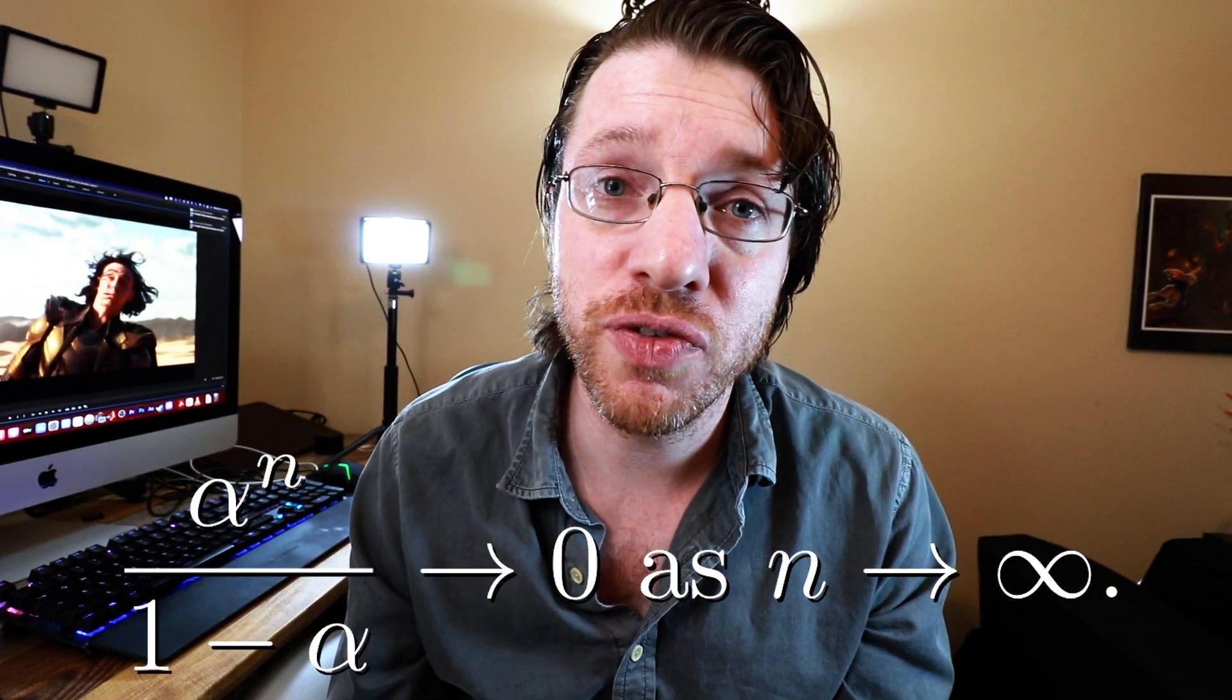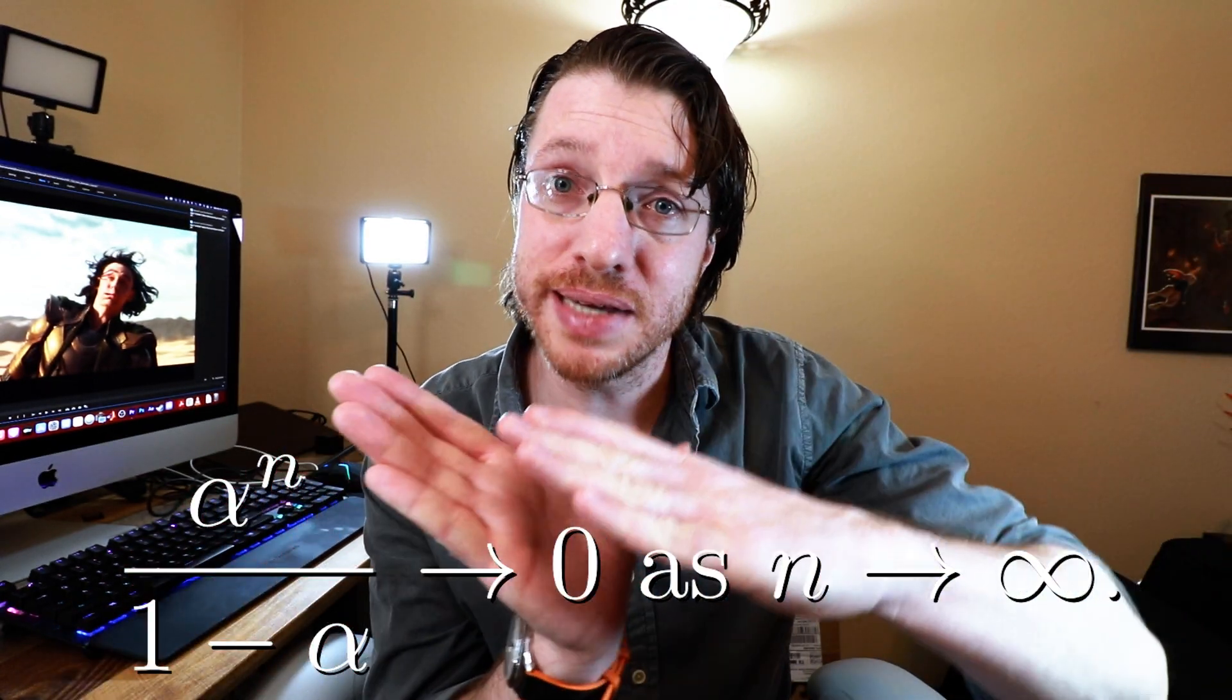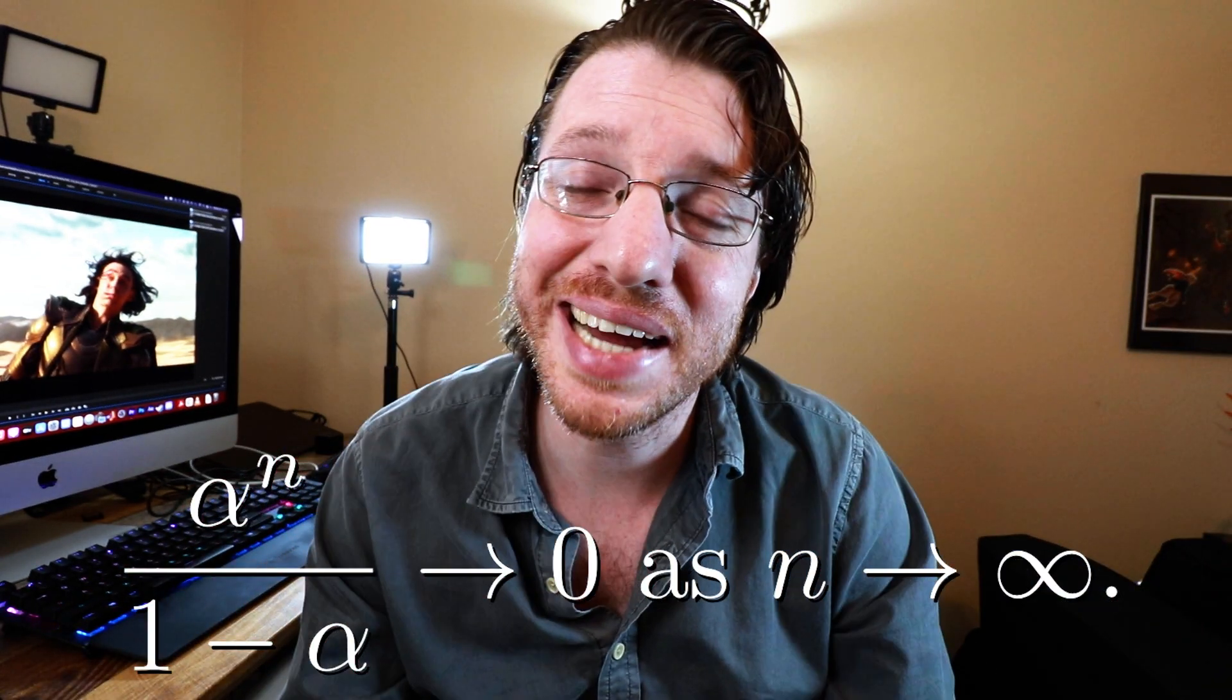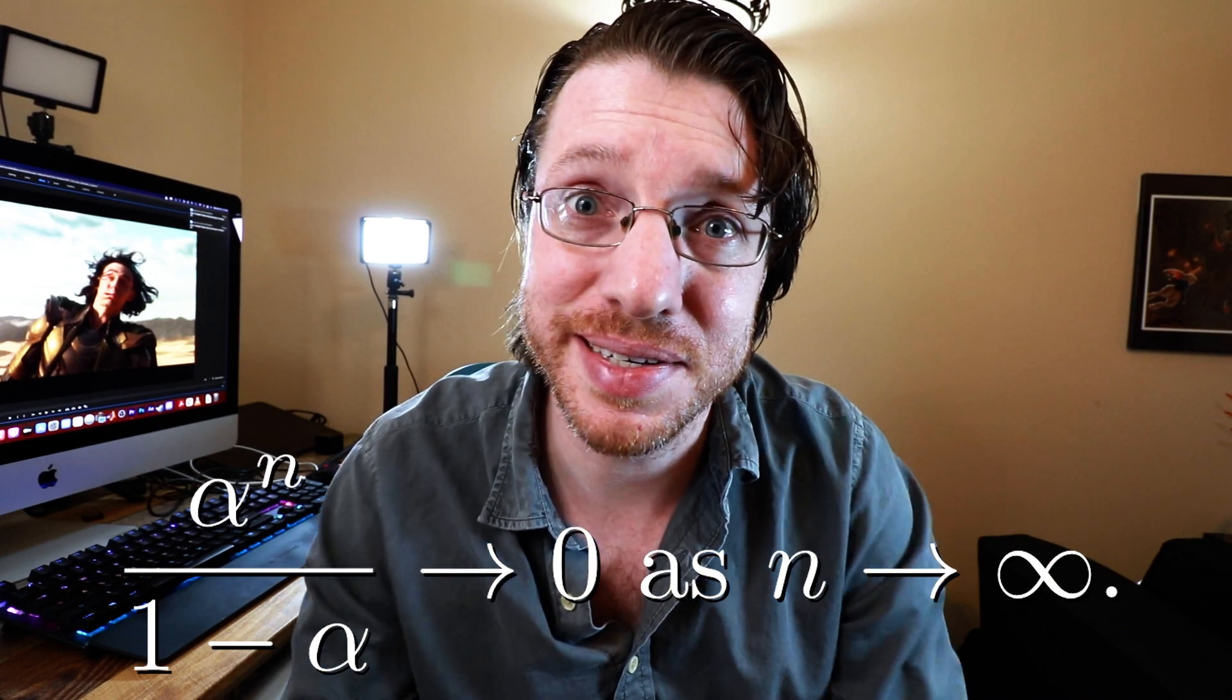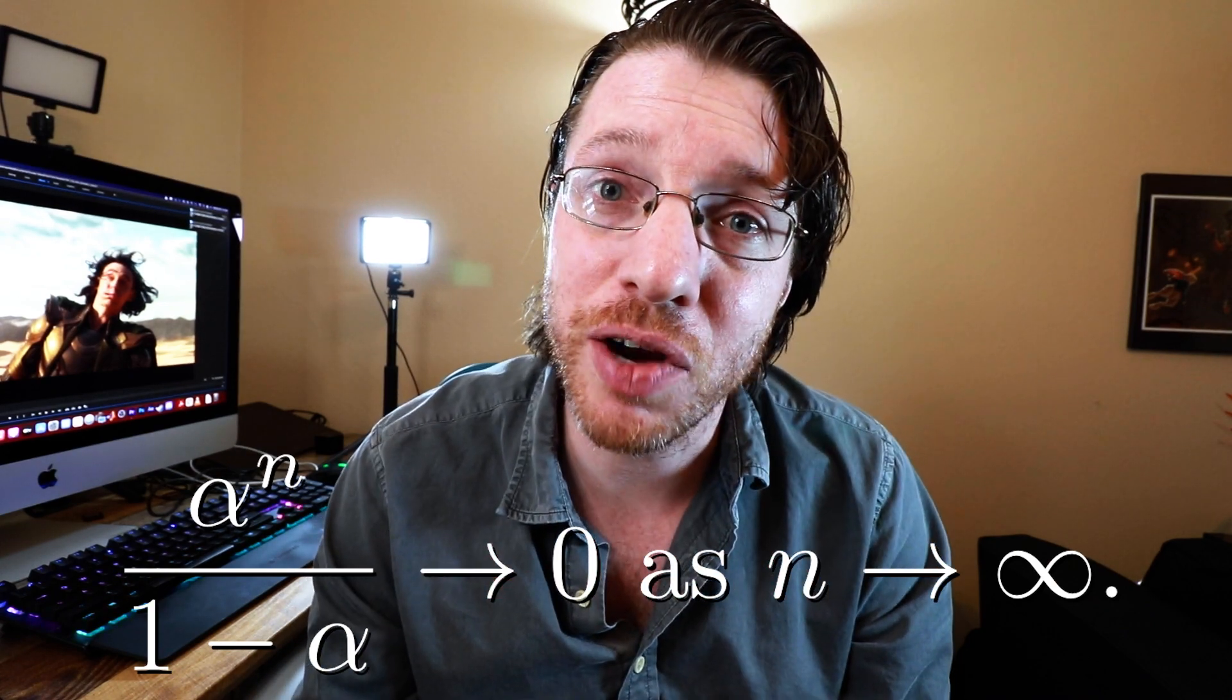And we see that since this upper bound is sort of dominated by this term alpha raised to the n, well, as n goes to infinity, that whole tail is narrowing down into a single point. And so now we know that the limit exists. And now I'm telling you that this is going to be our fixed point. And that's not actually all that hard to see.